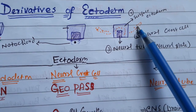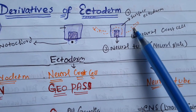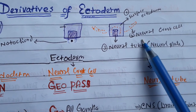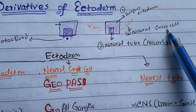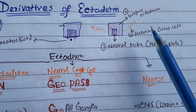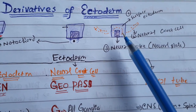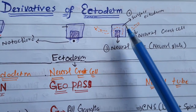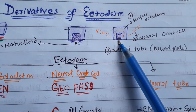Before the closure of this neural tube, some cells are going to separate and migrate into different parts of the body. The collection of these cells is called the neural crest. The ectoderm consists of three parts: surface ectoderm, neural tube, and neural crest.